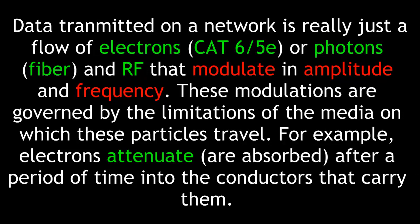Data transmitted on a network is really just a flow of electrons, such as through Category 6 or 5e copper wire, or photons through fiber, and RF if it's wireless. These modulate in amplitude and frequency, governed by the limitations of the media on which these particles travel. For example, electrons attenuate — they are absorbed after a period of time into the conductors that carry them. In Category 6 or 5e, those electrons traveling on copper wire have a range limitation of about 100 meters.